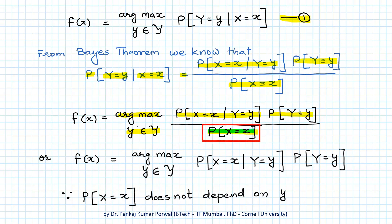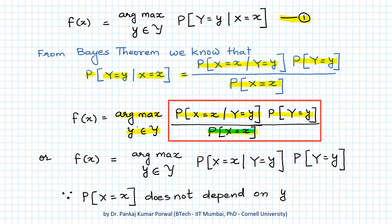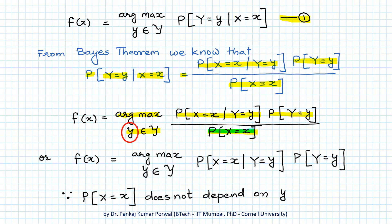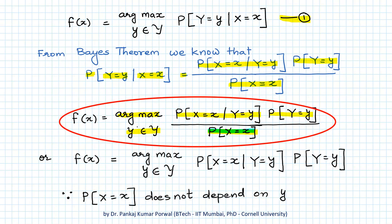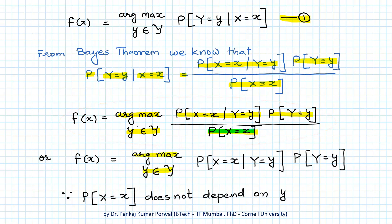Even though the P(X=x) term will affect the maximum value of the function, it will not affect the position — that is, the value of y where the maximum occurs. So we can drop this term from our maximization, and this becomes argmax over y of P(X=x | Y=y) times P(Y=y).